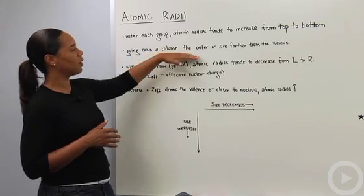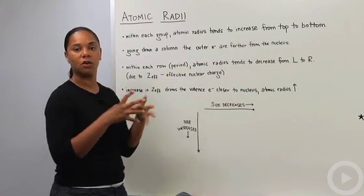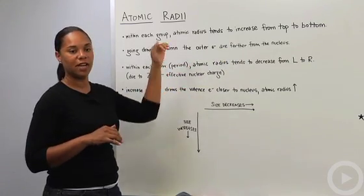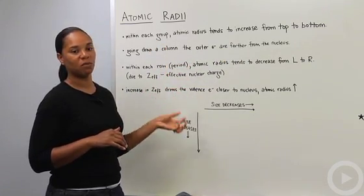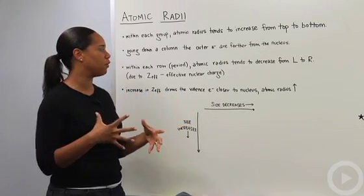So why is that? That's because going down a column, the outer electrons are further from the nucleus, so the valence electrons. As you go down the columns, your principal quantum number increases, right? So then you have larger orbitals that are further away from the nucleus.